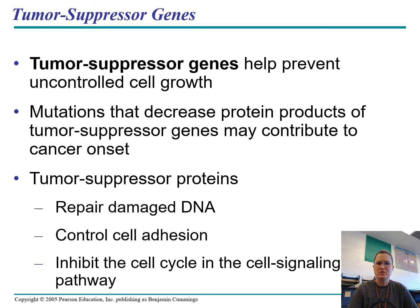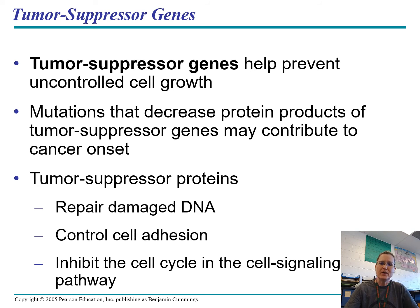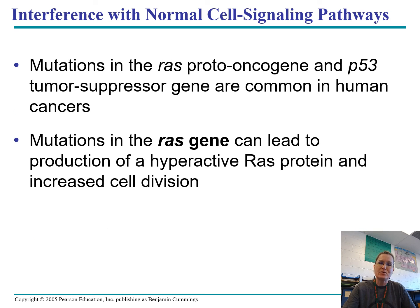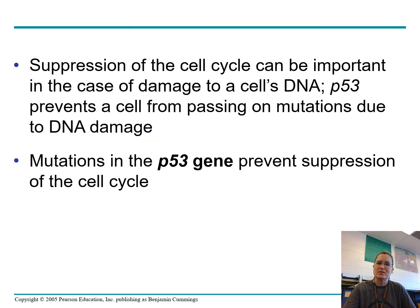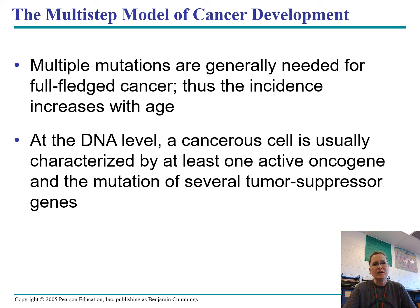Tumor suppressor proteins work to keep everything working the way it's supposed to. We have P53 and the RAS gene — both of those are tumor suppressors. Eventually we'll also get to BRCA, which is another tumor suppressor associated with breast cancer.